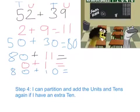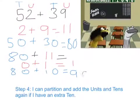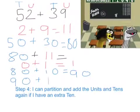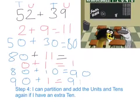Okay, so zero add one equals one. Eighty add ten gives me ninety, so the final answer must be ninety-one. Fantastic! Which means fifty-two add thirty-nine gives us ninety-one.